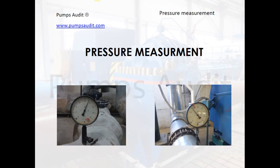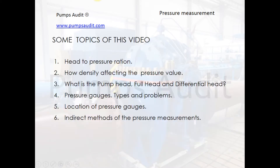Having the value of pressure, we can estimate a real pump head, the position of a pump operating point, and decide whether the pump operates effectively or not. Topics of this video include: head-to-pressure ratio, how density affects the pressure value, what is pump head — full pump head and differential pump head — pressure gauge types and problems, location of pressure gauges, and indirect matters of pressure measurements.